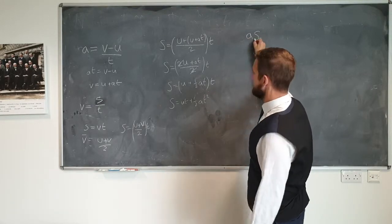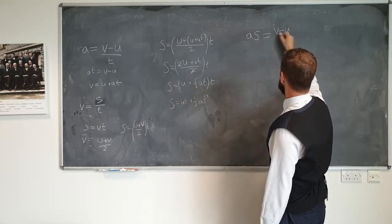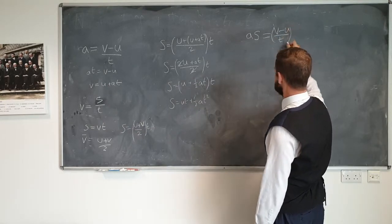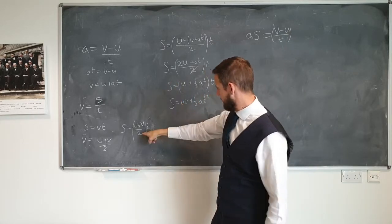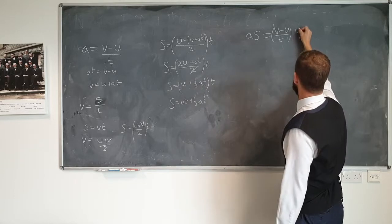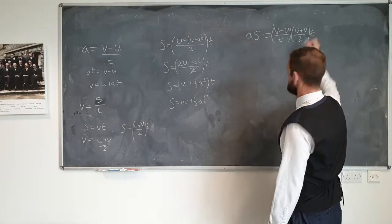AS is going to be A, which is V minus U over T, multiplied by S, which is U plus V over 2 times T.